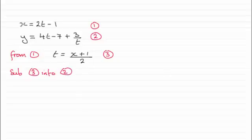And doing that, what we've got then is therefore y equals 4 times t, so 4 times all of x plus 1 over 2, and then we've got the minus 7, and then plus 3 divided by all of t. So that's going to be x plus 1 over 2 there.